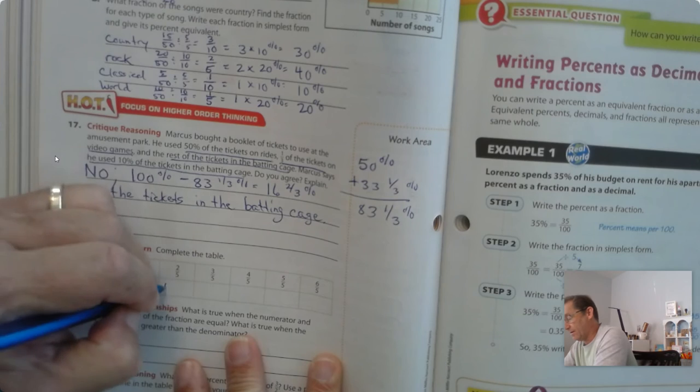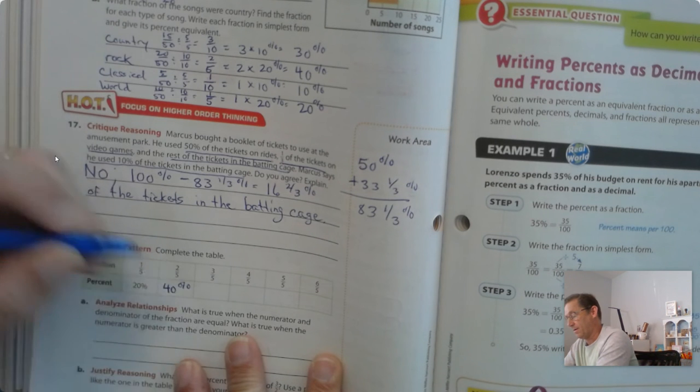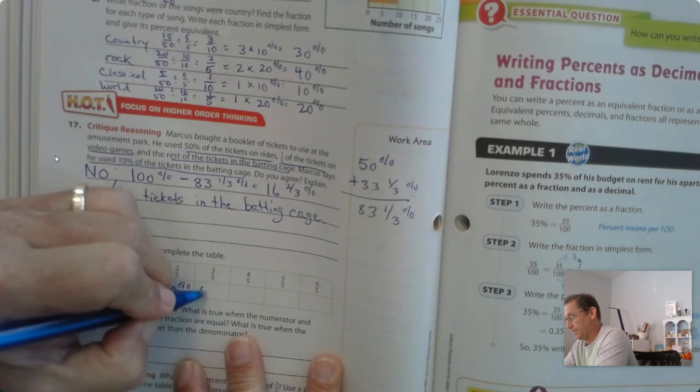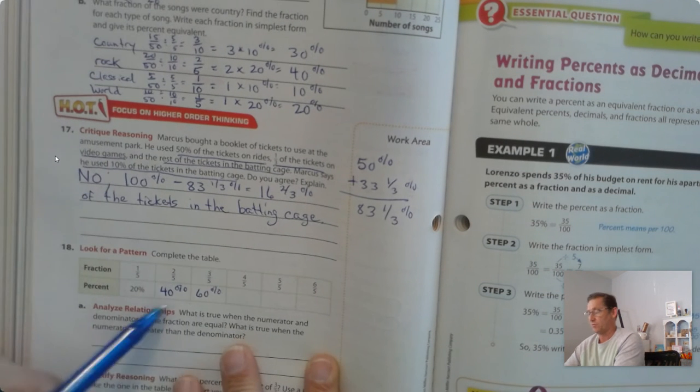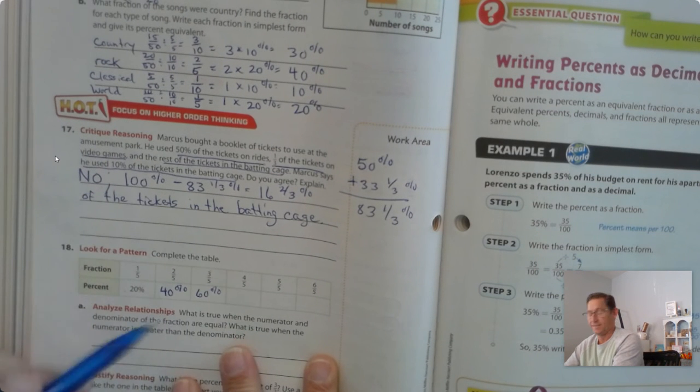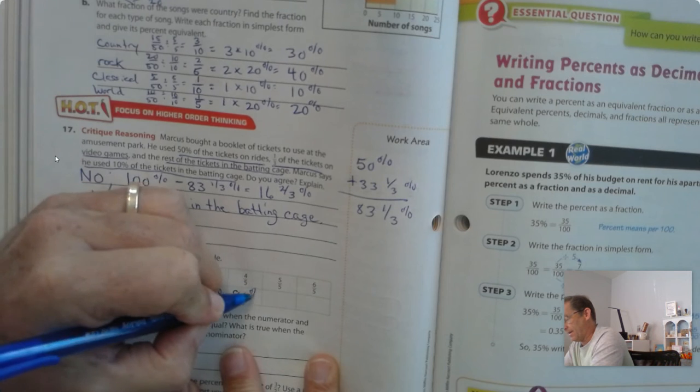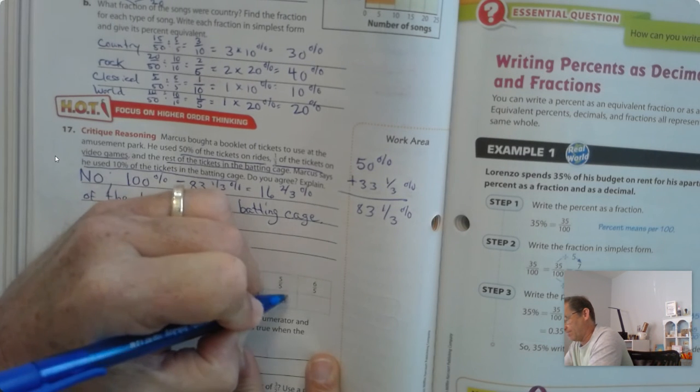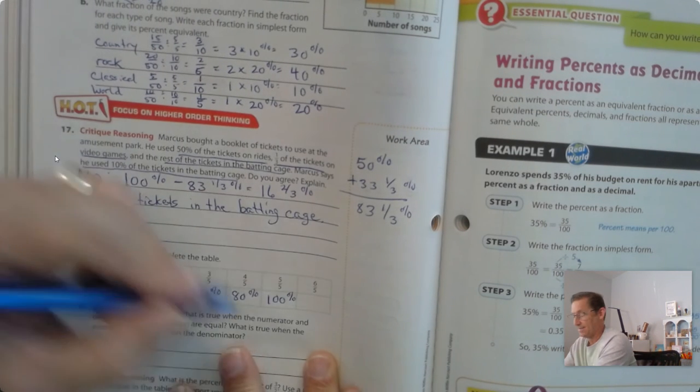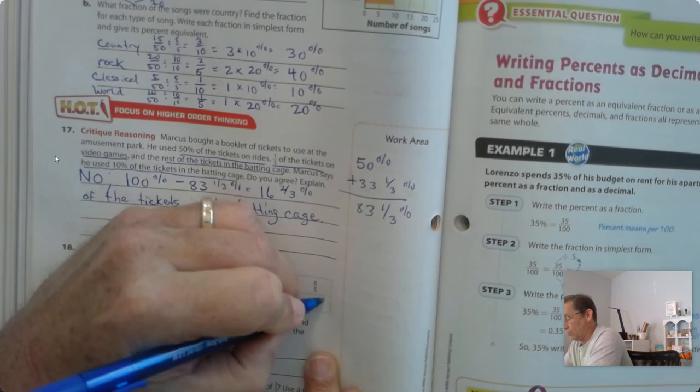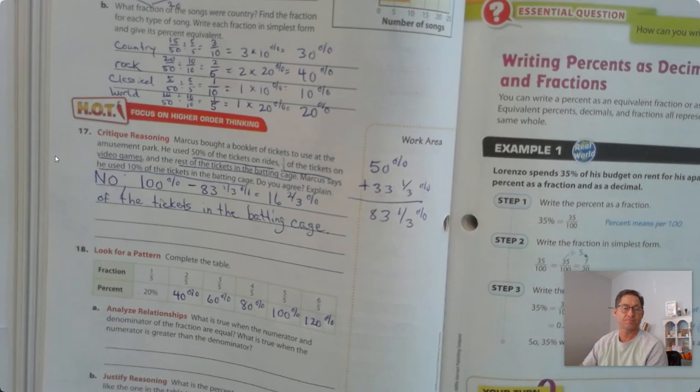So, if we just double it, that would be 40%. If you triple, 60%. And so, we're just going to keep going, right? 20, 40, 60, 80%, 100%, 120%.